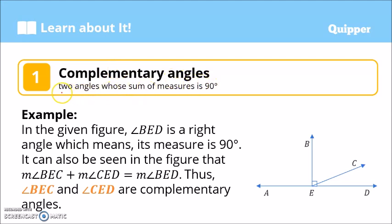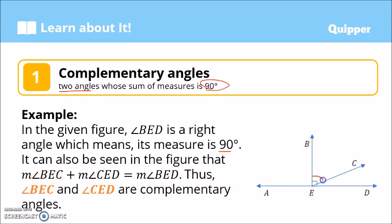So what are complementary angles? Complementary angles are two angles whose sum of measures is 90 degrees. So if we have two angles and we add them, the sum is 90 degrees — we call them complementary angles. In this example, angle BED is a right angle because of the small square shown, so the measure of angle BED is equal to 90 degrees. It can also be seen in the figure that the measure of angle BEC plus the measure of angle CED...